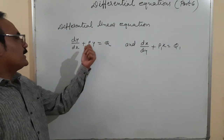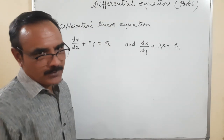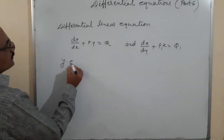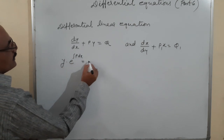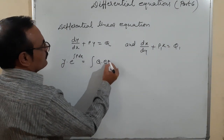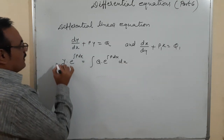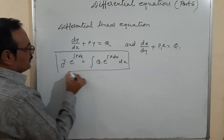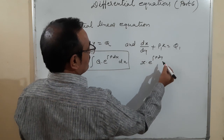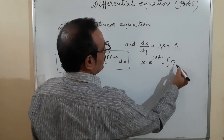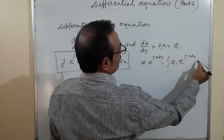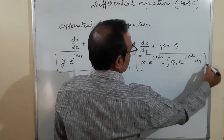The solution of dy/dx + Py = Q is: y · e^(∫P dx) = ∫Q · e^(∫P dx) dx. And the solution of the second form dx/dy + Px = Q is: x · e^(∫P1 dy) = ∫Q1 · e^(∫P1 dy) dy.